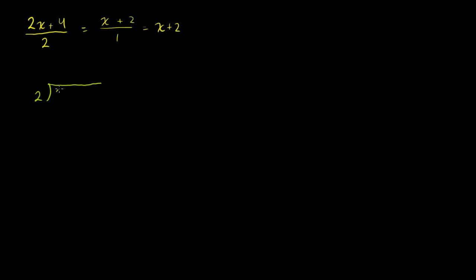So you could have also written this as: 2 goes into 2x plus 4 how many times? And you would perform this the same way you would do traditional long division. You'd always start with the highest degree term. 2 goes into 2x how many times? It goes into 2x x times. And you put the x in the x place. x times 2 is 2x. And just like traditional long division, you now subtract. So 2x plus 4 minus 2x is 4. And then 2 goes into 4 two times. Put that in the constants place. 2 times 2 is 4. You subtract — remainder 0.